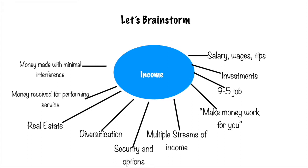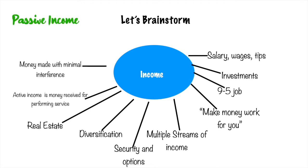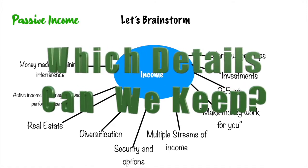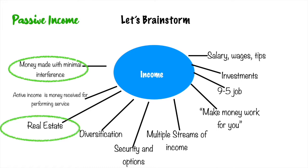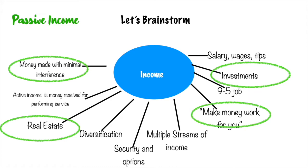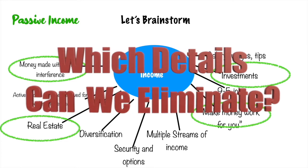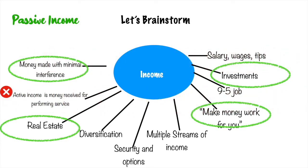Let's say we were going to write a paragraph about passive income. Which details from this concept map could we use, and which would we need to eliminate? We would definitely use money made with minimal interference, real estate, investments, and making money work for you. Now let's eliminate what's irrelevant to passive income — we wouldn't talk about active income, salary, tips and wages, or nine-to-five jobs.